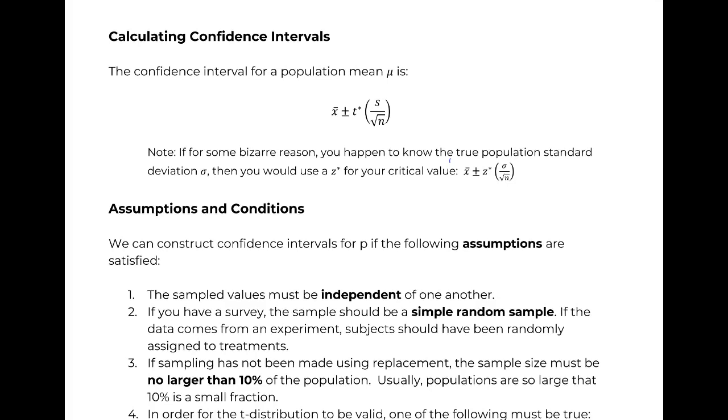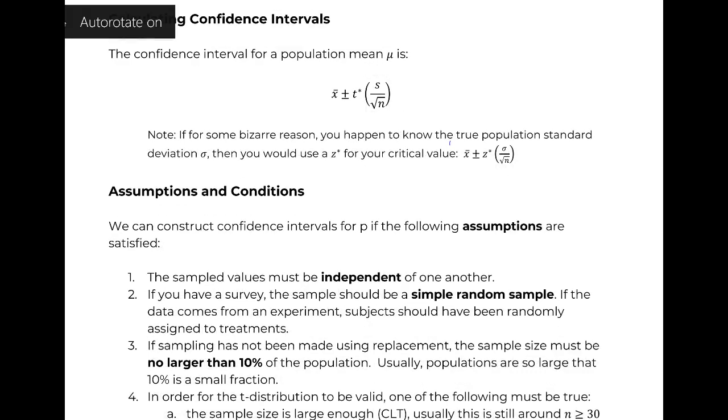It's on the formula sheet. X-bar plus or minus our t-star. Basically, how many bunny hops, but this time we're talking about a t-distribution. And of course, our standard deviation is the sample standard deviation divided by square root of n.